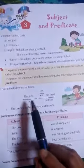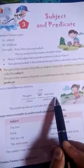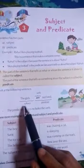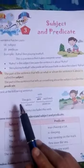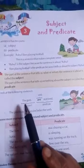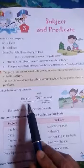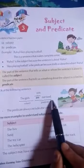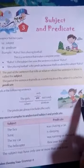Now look at another example: 'The girls are not tired.' So what is the subject? It is 'the girls.' We are talking about girls, and they are not tired. And the rest is the predicate.